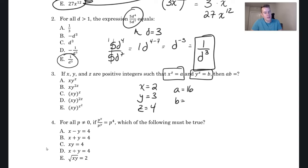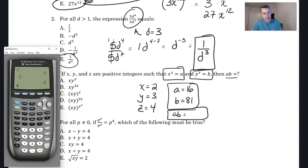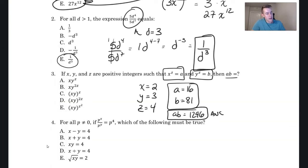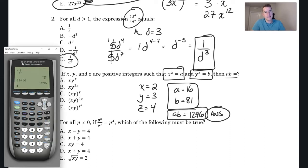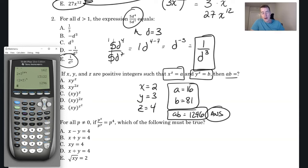And b = y^z = 3⁴ = 81. The question asks for a × b. So 81 × 16 = 1,296 — that's the answer to match. Let's check the choices. A is (2 × 3)⁴ — not 1,296. B is (2 × 3)^(2×4) — still not 1,296. C is (2 × 3)⁴ — let's type that in... there's 1,296 right there.